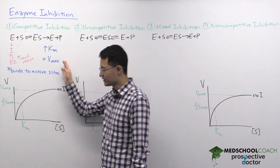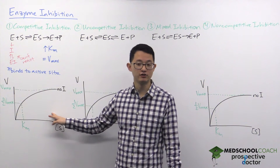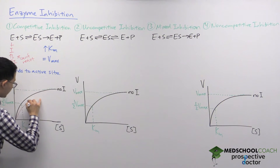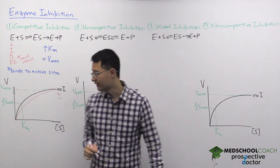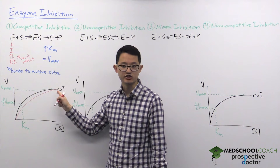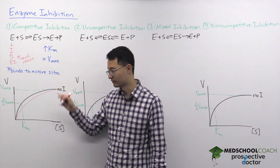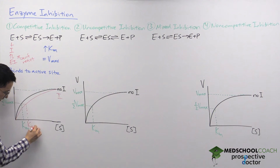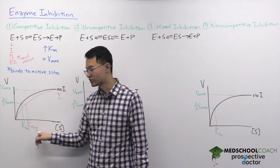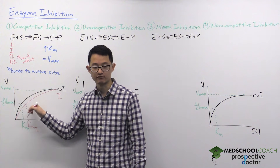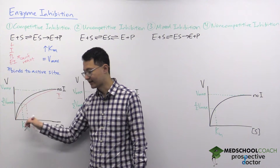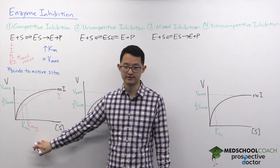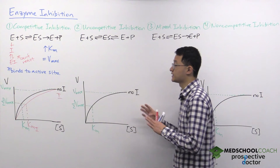We can now draw what the Michaelis-Menten saturation curve looks like after adding the competitive inhibitor. The maximum reaction velocity doesn't change — you're still able to reach that same Vmax. However, you do need a larger substrate concentration to reach the half-maximum reaction velocity. This reflects the fact that KM is larger with the inhibitor, showing that the inhibitor decreases the affinity of the enzyme for its substrate.